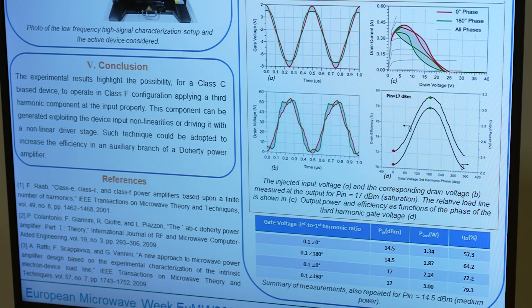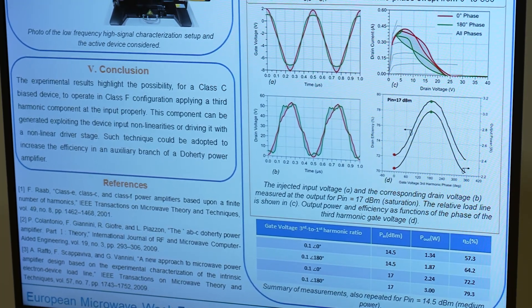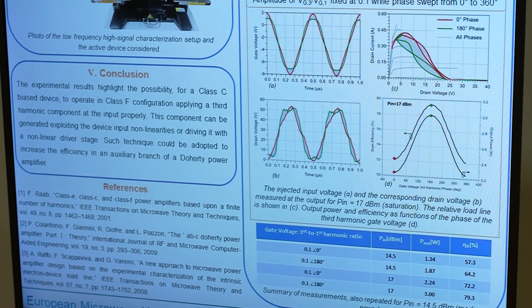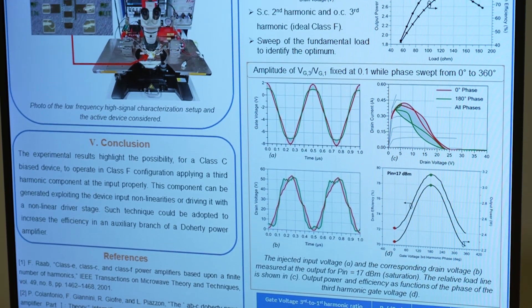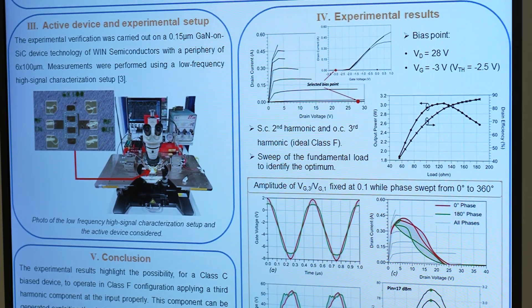The experimental verification of the proposed idea was carried out on a 0.15 micrometer gallium nitride on silicon carbide device technology of Wind Semiconductors with a periphery of 6 by 100 micrometers.